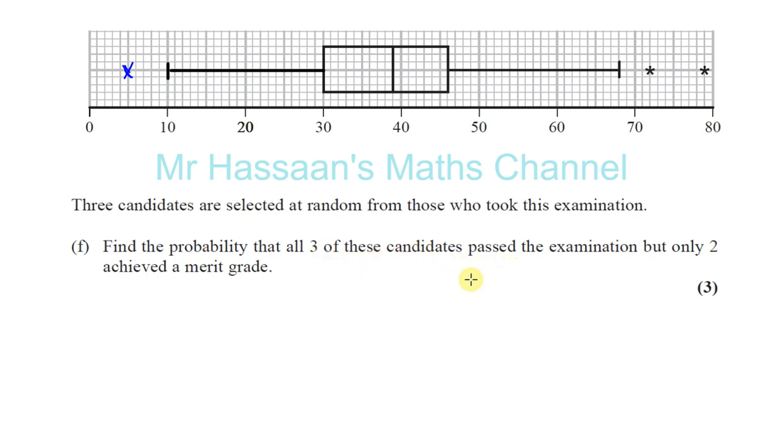Okay, so you're going to have 0.25. There's two of them that got the top mark, so that's going to be squared. 0.25 times 0.25. And one of them, they passed but didn't get a merit grade. So that means they got more than the lower quartile, but less than the upper quartile.